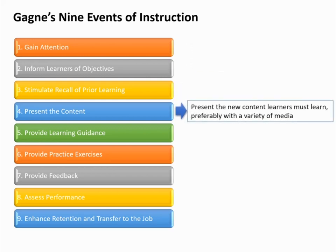Event 4 — Present the Content: Present the new information to the group in an effective manner. Content should be chunked and organized meaningfully, and typically is explained and then demonstrated. To appeal to different learning modalities, a variety of media should be used if possible, including text, graphics, audio narration, and video.